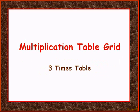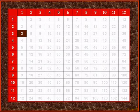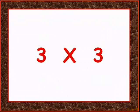Let's do this one more time. Please repeat with me — it will be a little faster. Get ready. 3 times 1 is 3, 3 times 2 is 6, 3 times 3 is 9, 3 times 4 is 12.